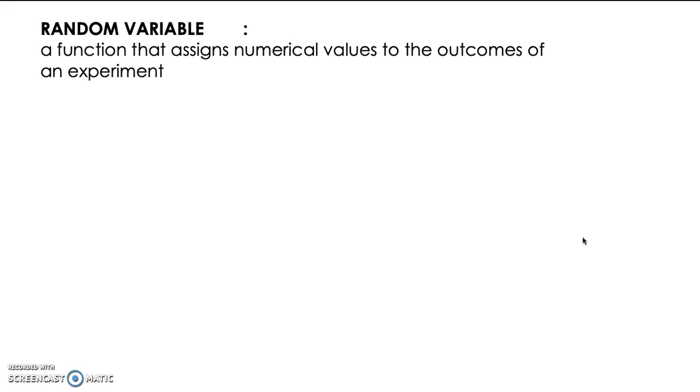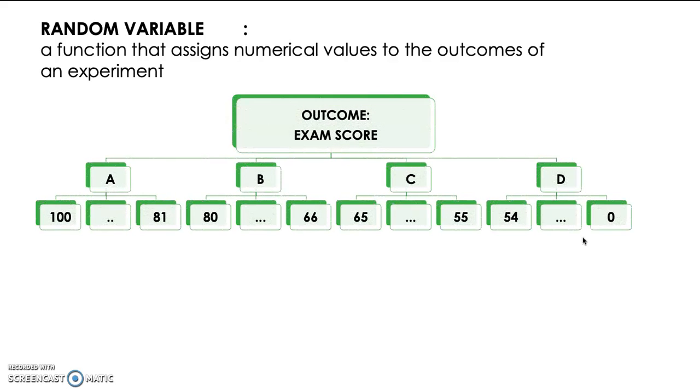Thus, by definition, a random variable is a function that assigns a numerical value to the outcome of an experiment. From the exam score case, if we define the experiment as an exam score, like in our first experiment, the random variable would be the score between 0 to 100.